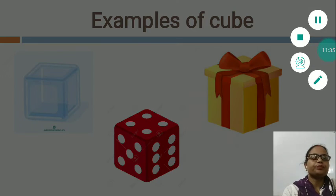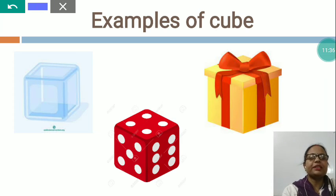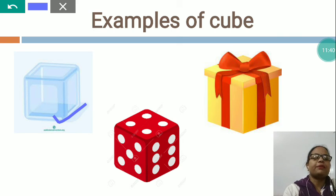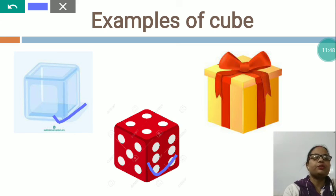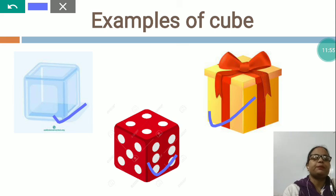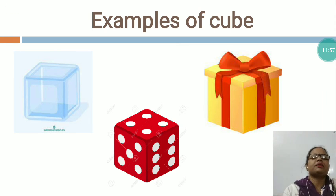Some examples of cube: this is an ice cube — have you seen an ice cube? Cube shape. This is the Ludo dice — have you seen the Ludo dice? Cube shape. You can see this gift box — cube shape. These all are the examples of cube.